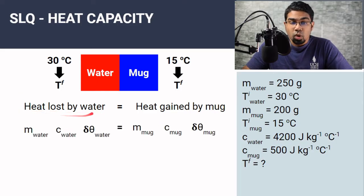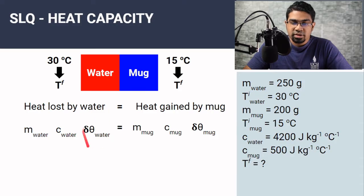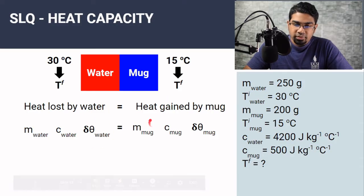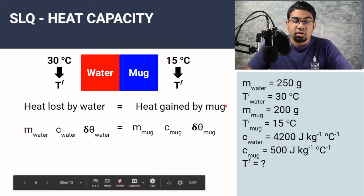Since this is heat lost by water, this mcΔθ will be related to the water — mass of water, specific heat capacity of water, and change in temperature of the water. Then we have heat gained by the mug, so all these physical quantities will be related to the mug: mass of mug, specific heat capacity of mug, and change in temperature of mug.